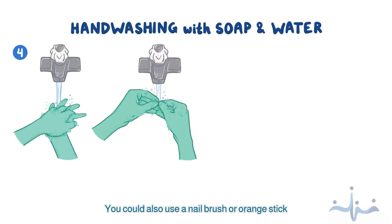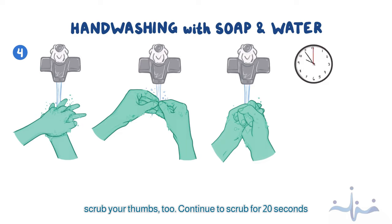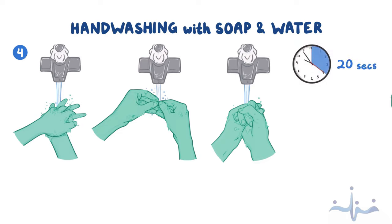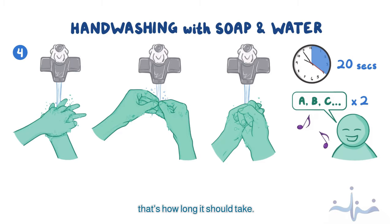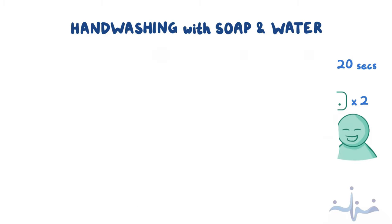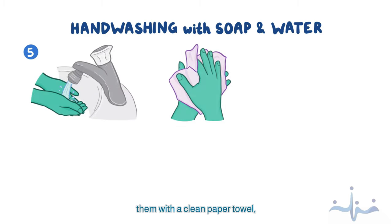Make sure your hands are lower than your elbows so that dirty water doesn't run up and contaminate your forearms. Apply some soap to one of your hands and lather it in between your fingers and under your fingernails. You could also use a nail brush or orange stick to clean under your nails if needed. Don't forget to scrub your thumbs too. Continue to scrub for 20 seconds or more — it may help to sing the ABCs twice, that's how long it should take. Once done, rinse your hands and dry them with a clean paper towel, starting from your fingertips and moving up the arm.